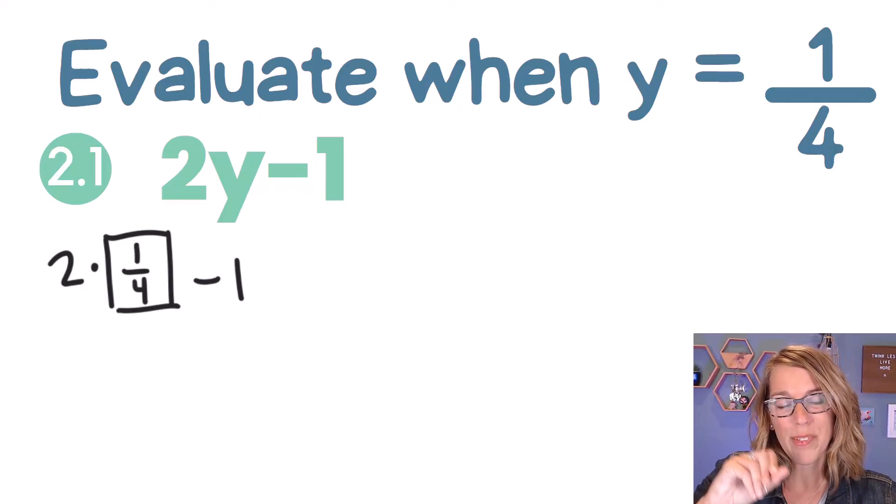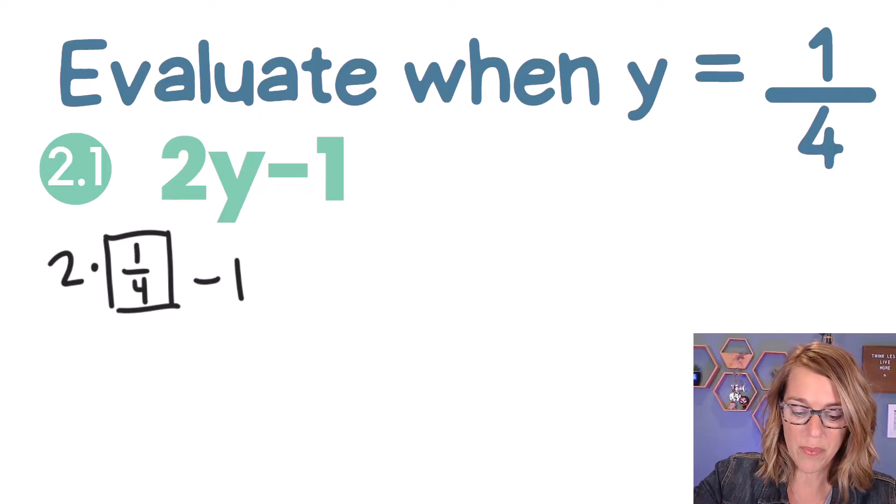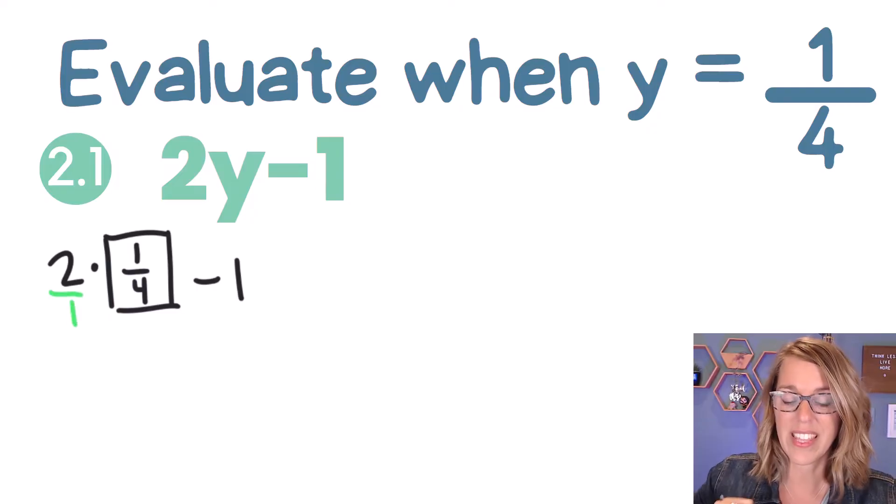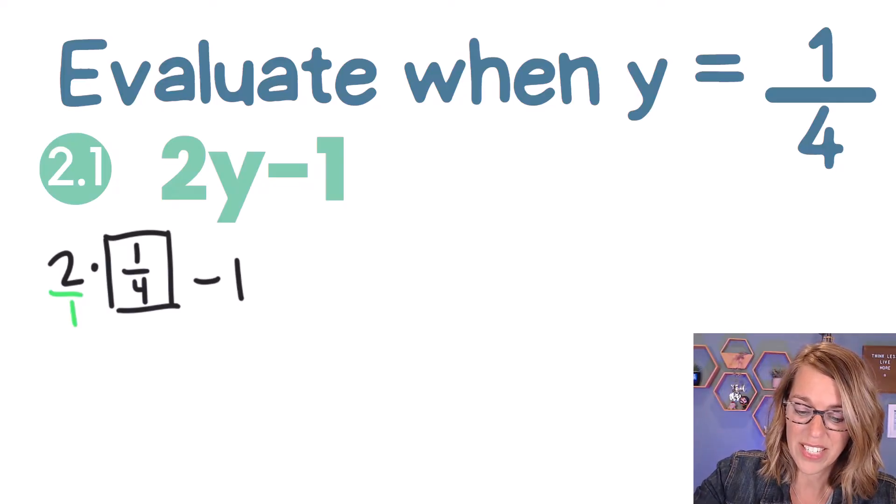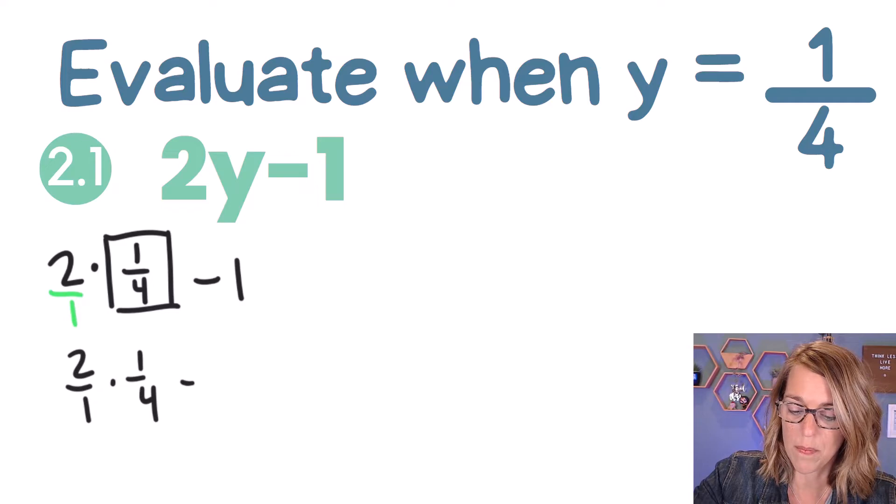Next I need to do this multiplication, 2 times 1/4, but I'm going to think of 2 as a fraction as well. I'm going to think of that as a 2 over 1, and then I can multiply straight across. So as I take what I've got, I've got 2 over 1 times 1 over 4 minus 1.